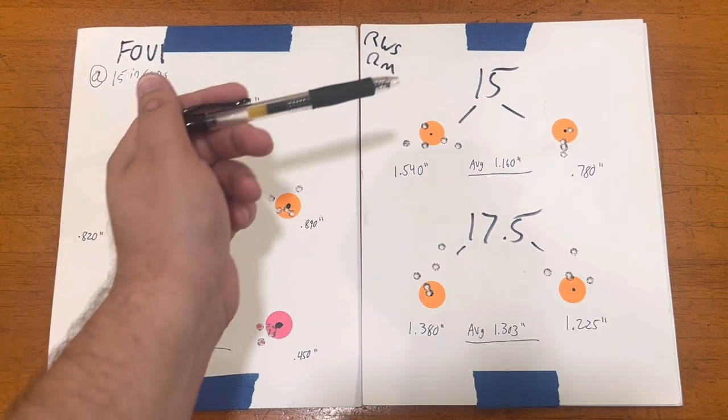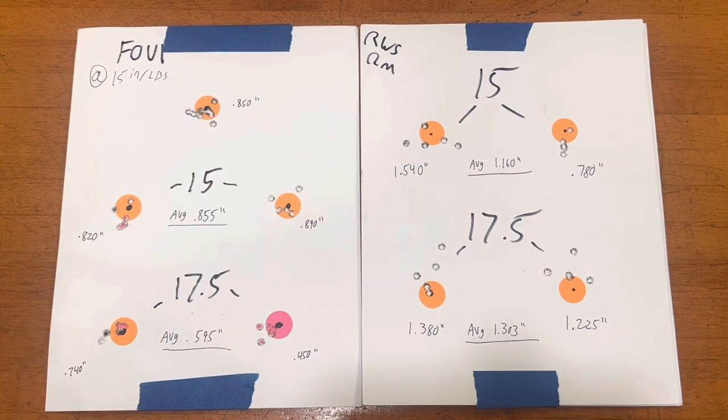With the Hogue we did shoot a foul group at 15 inch-pounds. With the Bravo I was shooting a good bit before, I probably shot 30 to 40 rounds prior to doing this test, so my barrel was adequately fouled with the RWS Rifle Match on the KRG, so we didn't need to shoot that foul group.